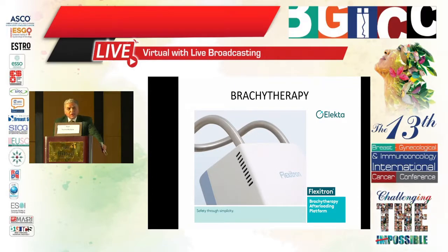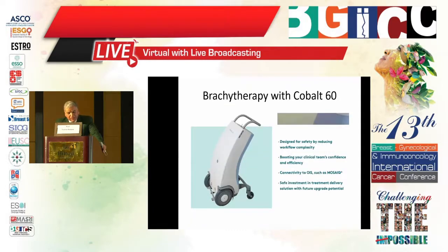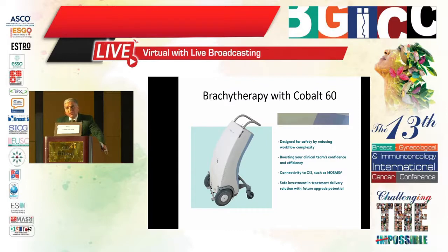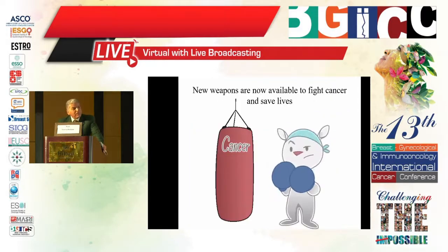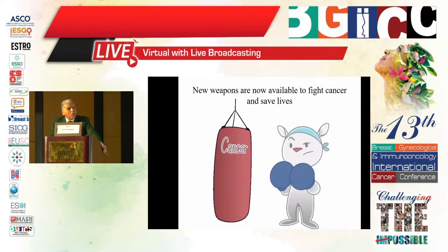The Flexitron will be installed and working within a few days. It is loaded with cobalt-60 sources, designed for safety by reducing workflow complexity and boosting clinical team confidence and efficacy. It can be connected to any oncology information system such as Mosaic, and is a safe investment for future upgrade. We have had brachytherapy since a very long time — first iridium, then cobalt — at the Alexandria Adil Mustabal Oncology Center, receiving patients from all over Egypt for more than 10 years.